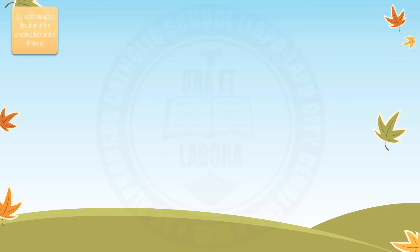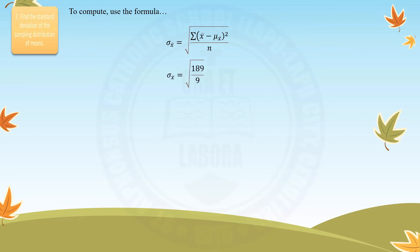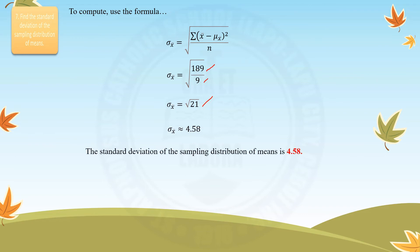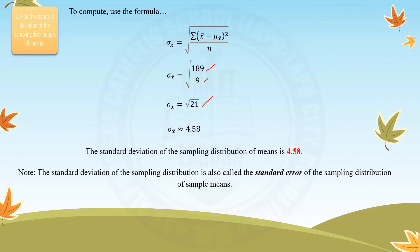For step 7, find the standard deviation of the sampling distribution of means. Substituting the summation of 189 divided by 9 into the formula gives us the square root of 21, which is approximately 4.58. Therefore, the standard deviation of the sampling distribution of means is 4.58. Note that this is also called the standard error of the sampling distribution of sample means.